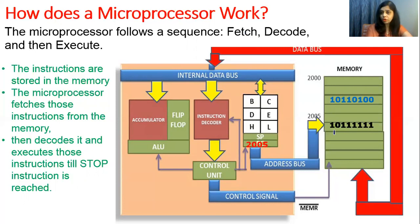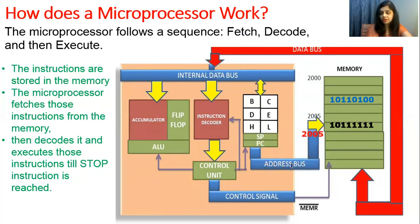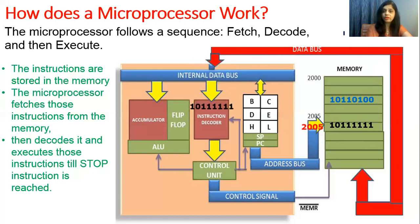For example, suppose an instruction is stored in memory at address 2005. The processor first sends this address on the address bus. As soon as the address goes on the address bus, the corresponding data flows on the data bus toward the microprocessor. The instruction then enters the instruction decoder, which finds out the meaning and executes the instruction, generating the necessary control signals. This is how a microprocessor works.